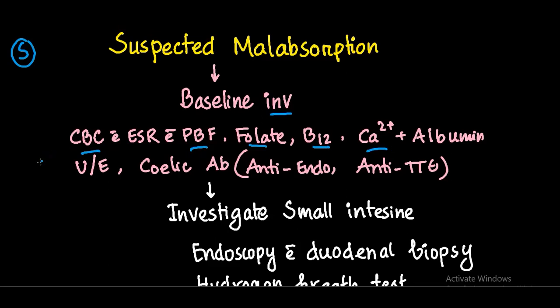Check calcium and albumin, because in malabsorption there is decreased absorption of vitamin D leading to hypocalcemia. Do urea and electrolytes as there will often be electrolyte abnormalities. Also do celiac disease antibodies — the anti-endomysial antibodies and anti-tissue transglutaminase antibodies.